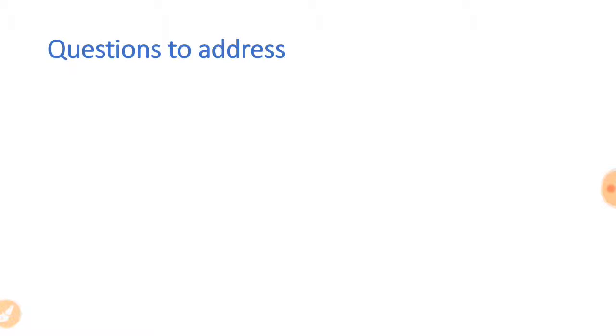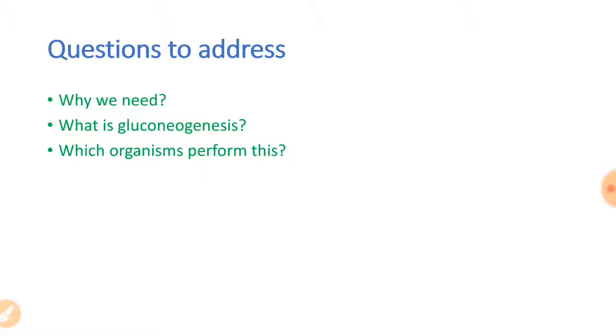We would discuss questions, and in the course of answering those questions we would finish this topic. The questions are: why do we need gluconeogenesis, what is gluconeogenesis, which organisms perform it, and how does gluconeogenesis occur in animals, plants, and microbes? Let's start with why we need it.